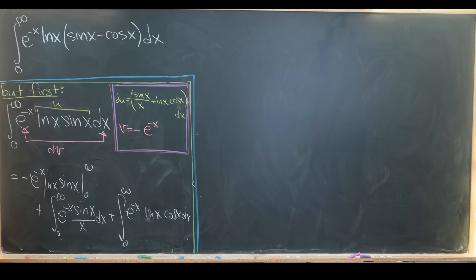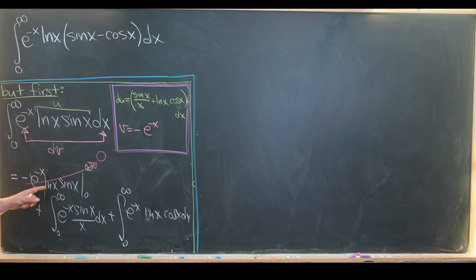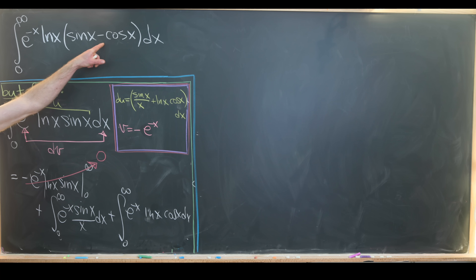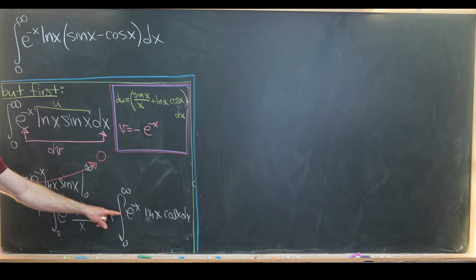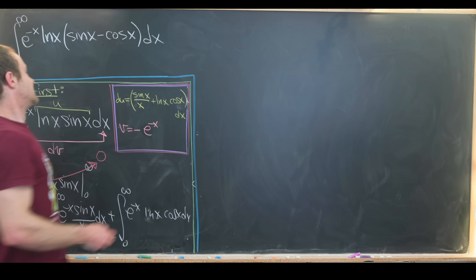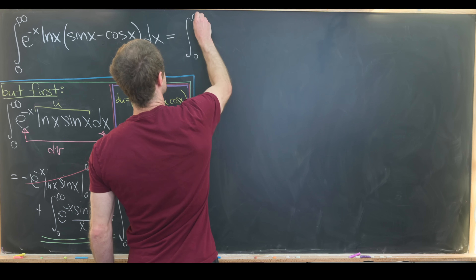Using the standard integration by parts formula, we get minus e to the minus x times natural log of x times sine of x — that's our uv term — plus the integral from zero to infinity of e to the minus x times sine of x over x dx, plus the integral from zero to infinity of e to the minus x times natural log of x times cosine of x dx. That's splitting our v du into two parts.